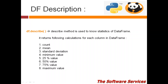Welcome to the class. In this session we will discuss the data frame description — that is, the statistics of a data frame. This includes how many numbers are there, the sum of all values, the average, the standard deviation, the minimum value, the maximum value, and the 25th, 50th, and 75th quartiles. All these statistics of the data frame can be obtained using the describe method.